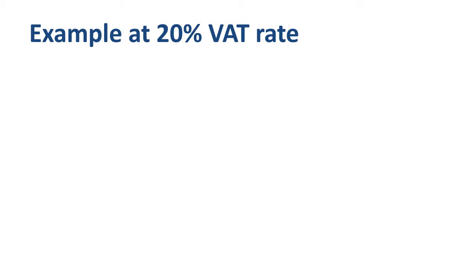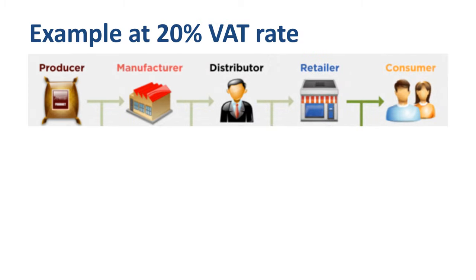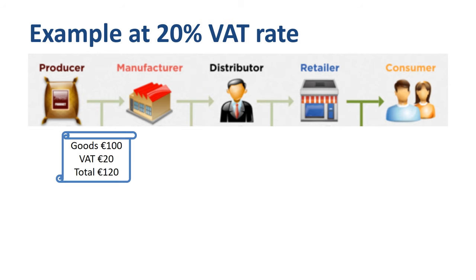Let's visualize the concept of VAT with a VAT example that includes numbers. We start on the left with a producer — a company where the owner walks on the beach to collect a bag of seashells and brings them to a jewelry manufacturer. She sends an invoice for the goods of 100 euro and charges VAT of 20, making the invoice total 120 euro.